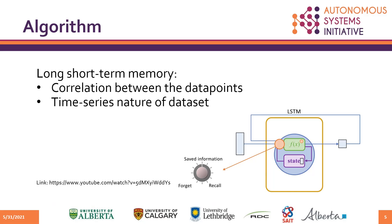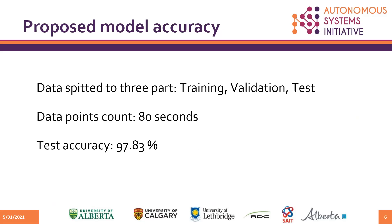We leverage the LSTM power to find the correlation between changes in the trajectory statistics. As you can see, the developed model now has 97.83% accuracy. This accuracy is based on the test data. As you may know, we have three different sets of data in the process of deep learning routines.